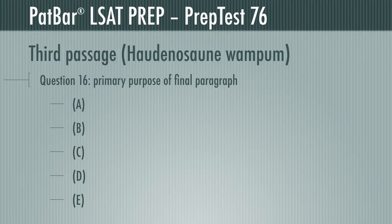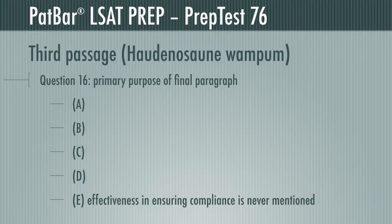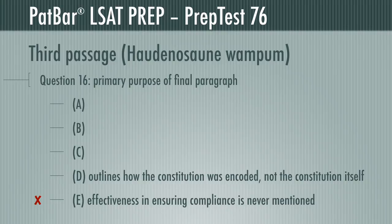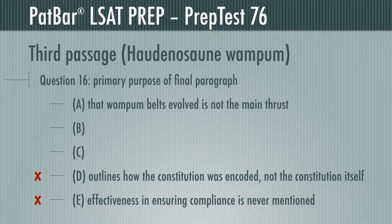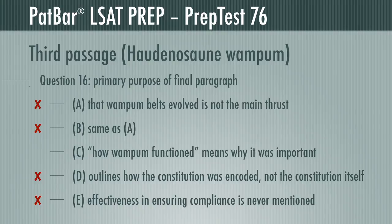Question 16 asks for the primary purpose of the final paragraph. There is one we can eliminate immediately: the paragraph notes how wampum belts were used to encode the constitution of the Confederacy, but says nothing of its effectiveness in determining how well its nations complied — E is incorrect. D cannot be correct because the author outlines how the constitution was encoded, not what it says. The paragraph discusses the evolution of wampum belts, but that evolution serves the main point — it is not the main point itself. Same with B: distinguishing between forms of wampum serves the main point. C uses the phrase 'how wampum functioned,' which is another way of saying why it was so vital. Getting to the primary purpose of a paragraph often means getting past the hows to find the why.